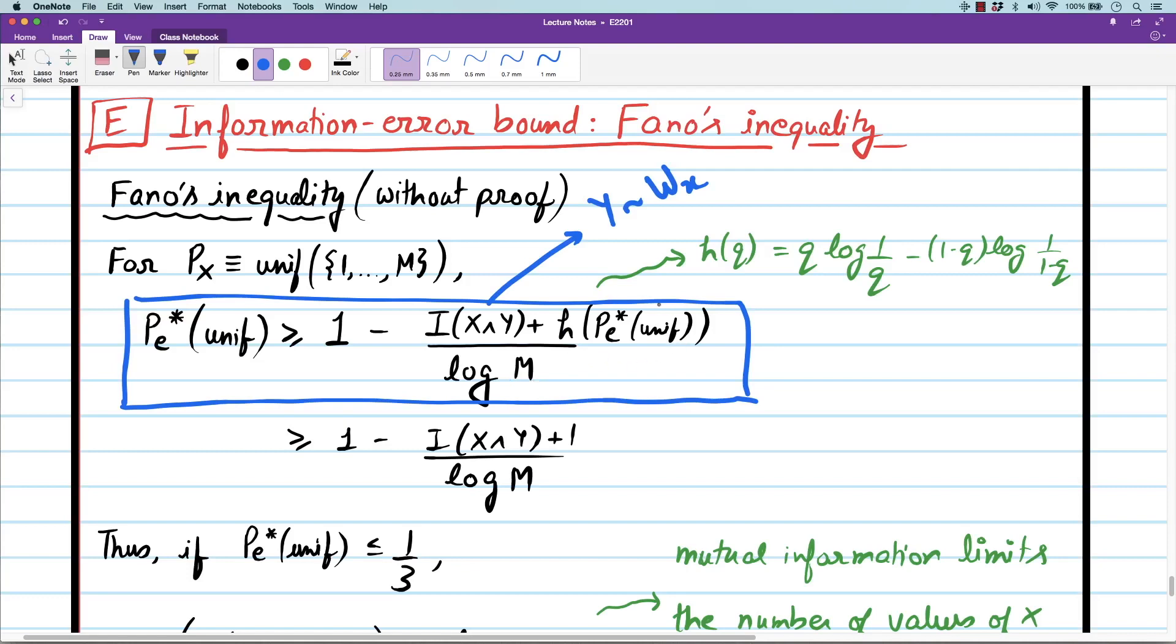This remaining small term here is actually the binary entropy function h of q and you can plot this function as a function of q. It looks like this and the maximum value it takes is just 1. So you can just work with a looser bound. This one says that p_e star can't be made 0, can't be made small unless i(x;y) by log M is close to 1.